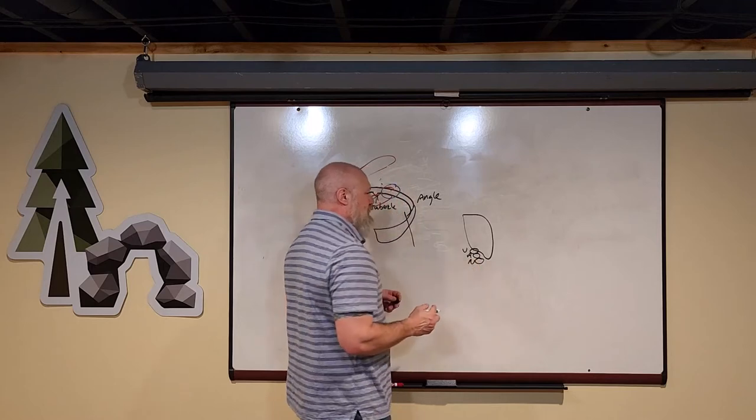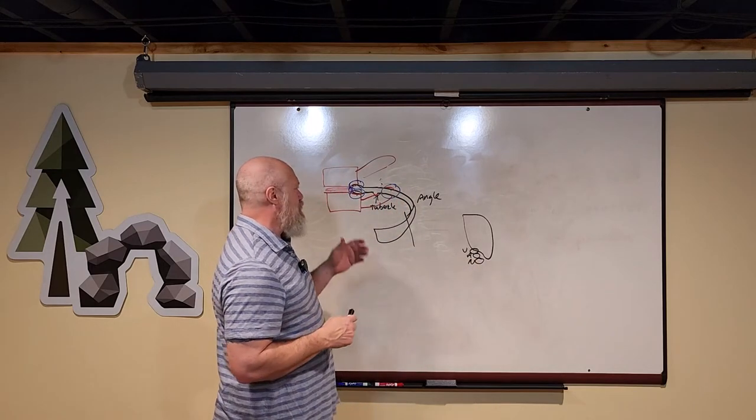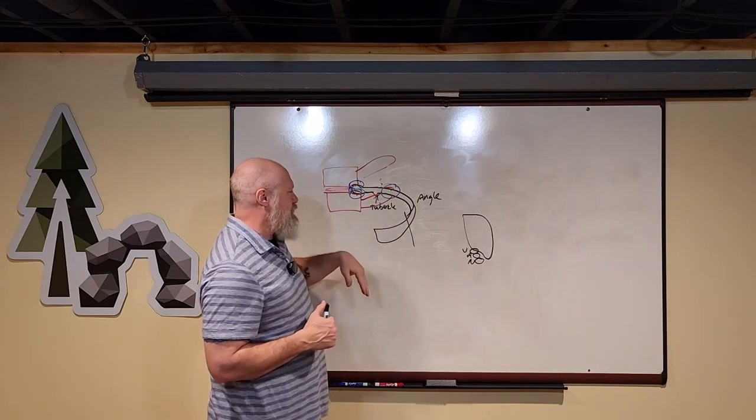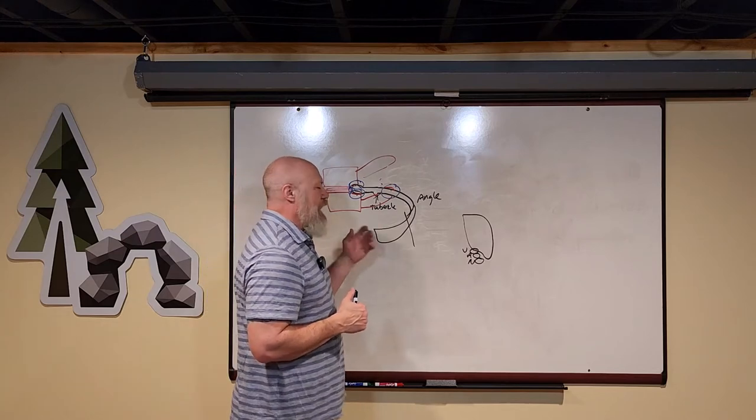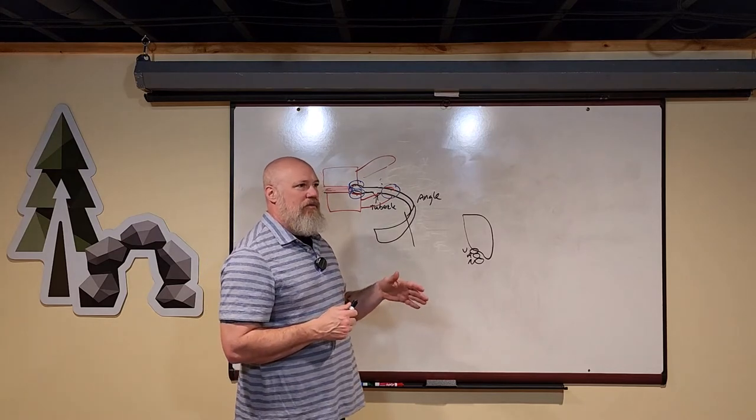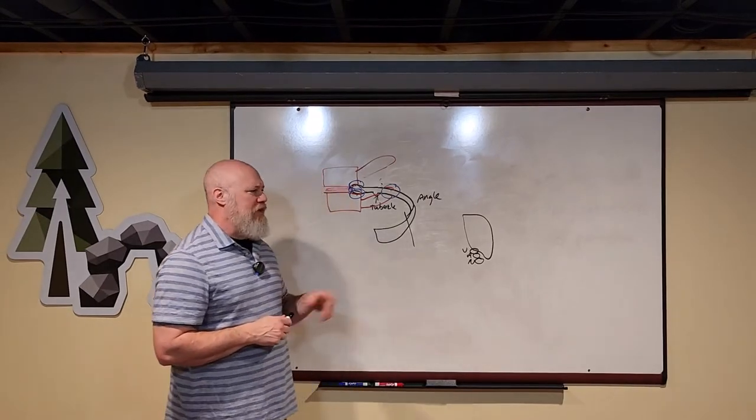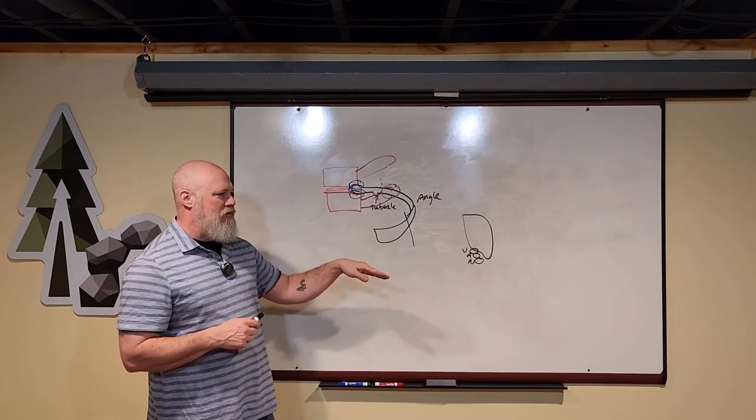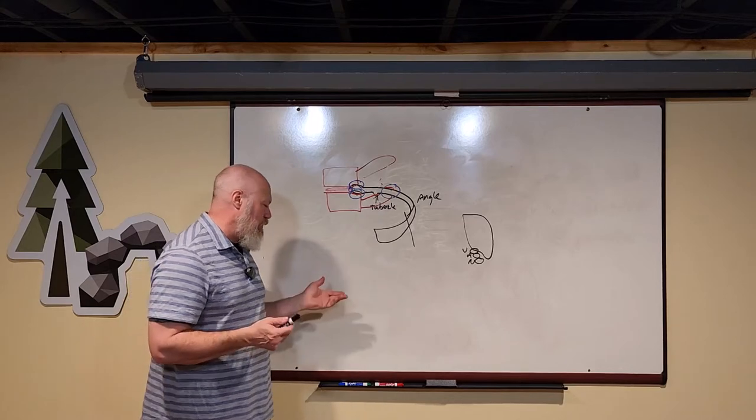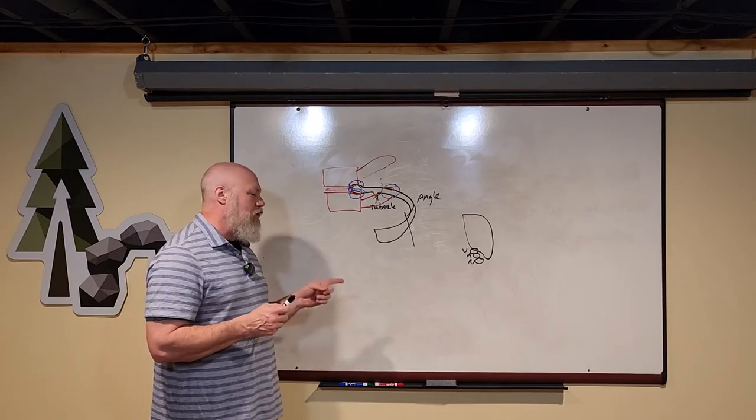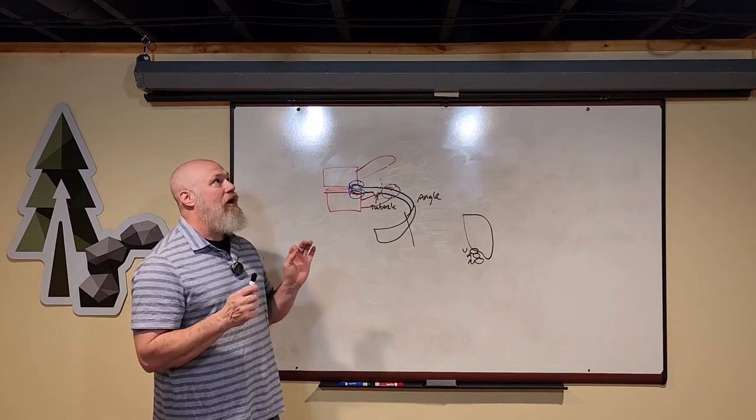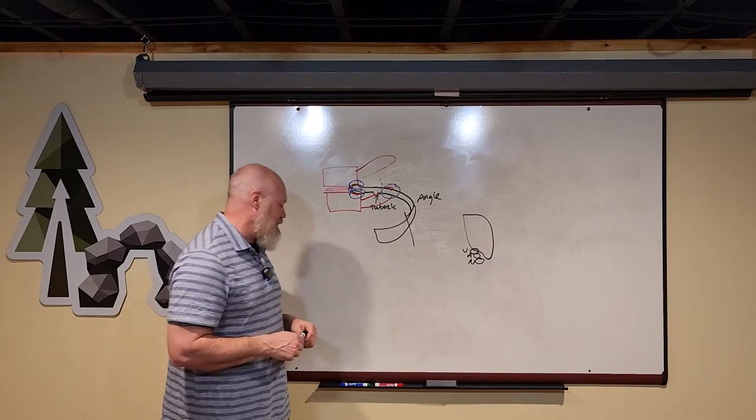The intercostal nerves are going to be intercostal nerves T1 through T6. And then you've got thoracoabdominal nerves T7 through T11. And then at T12, you've got one subcostal nerve.